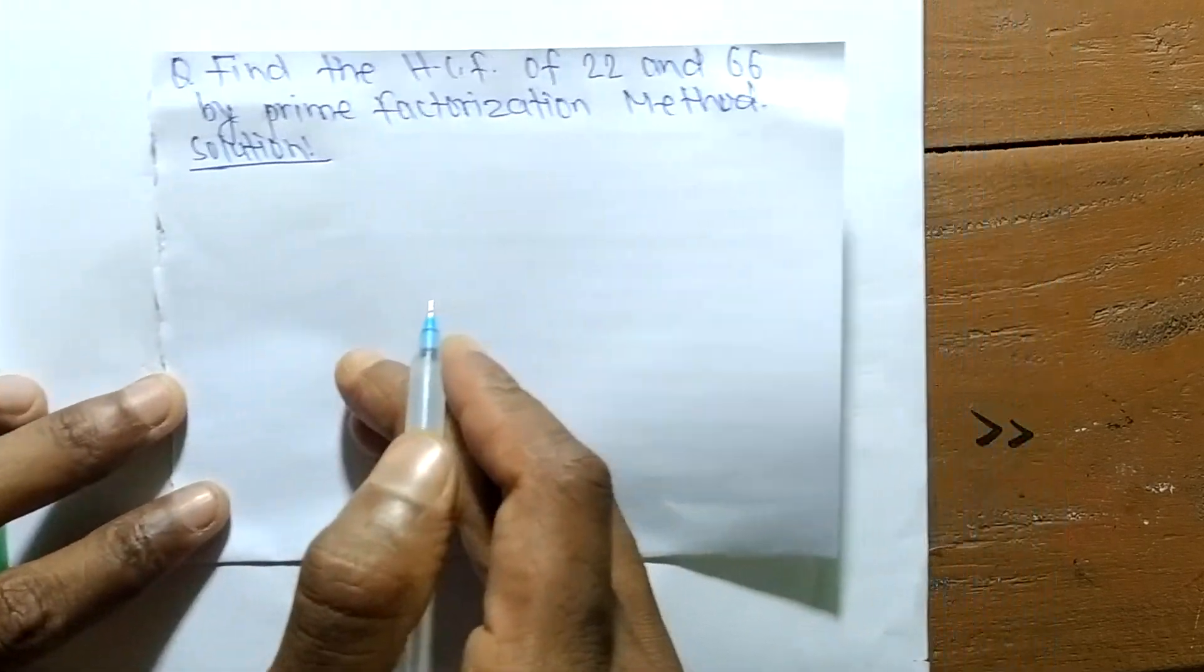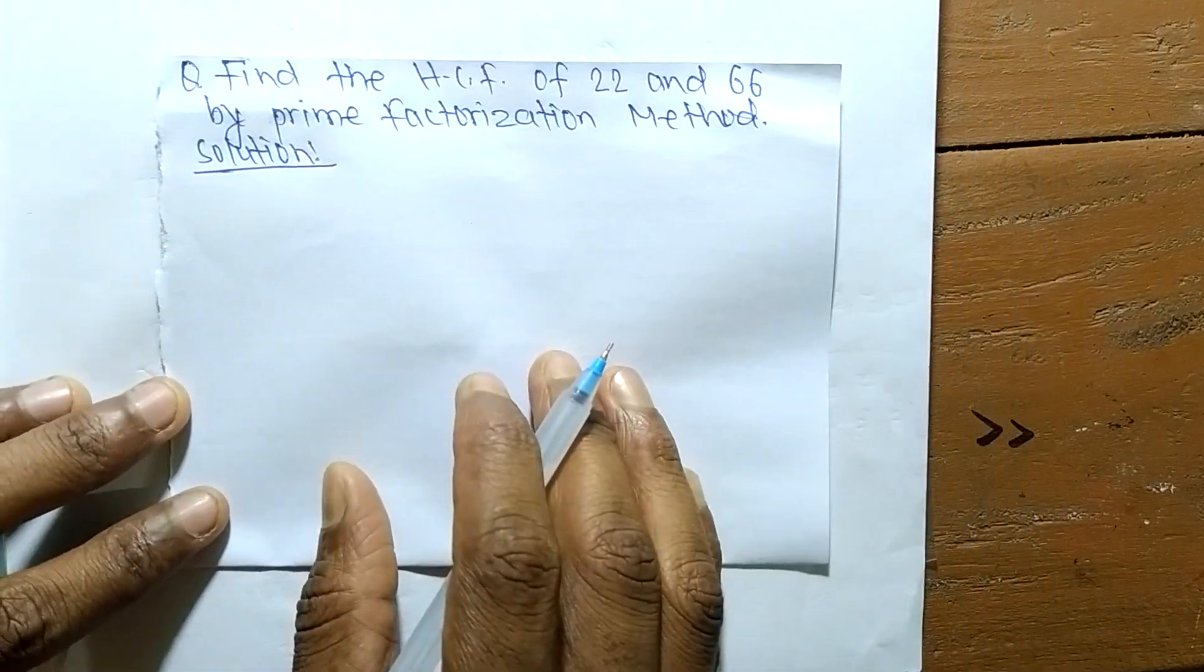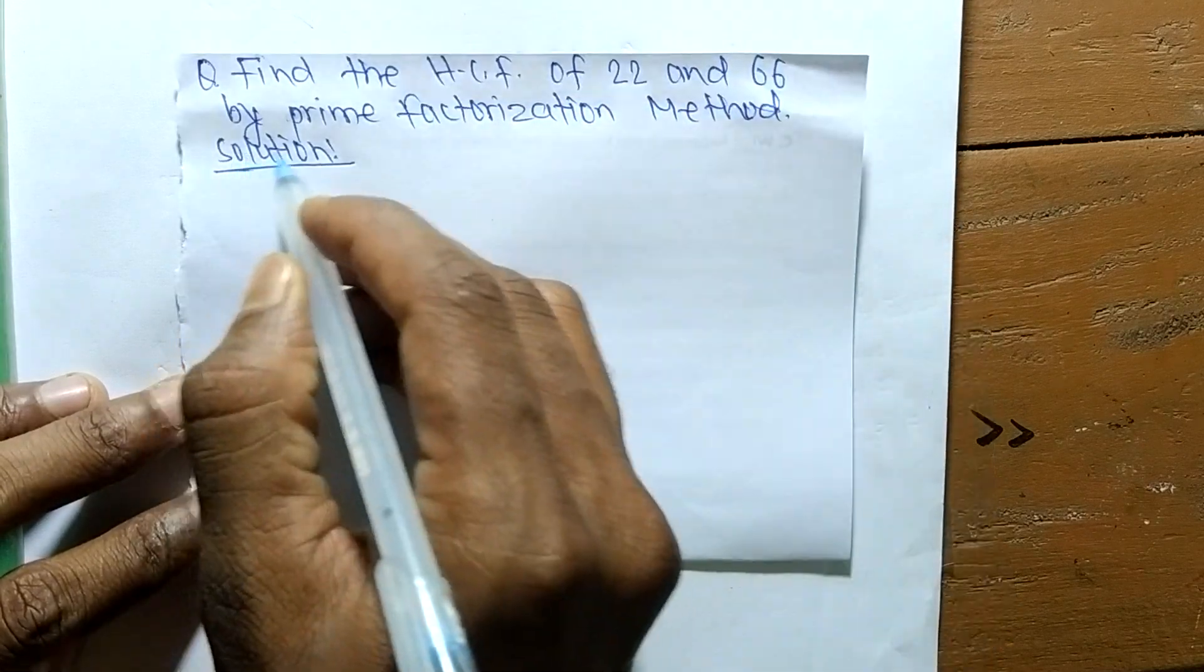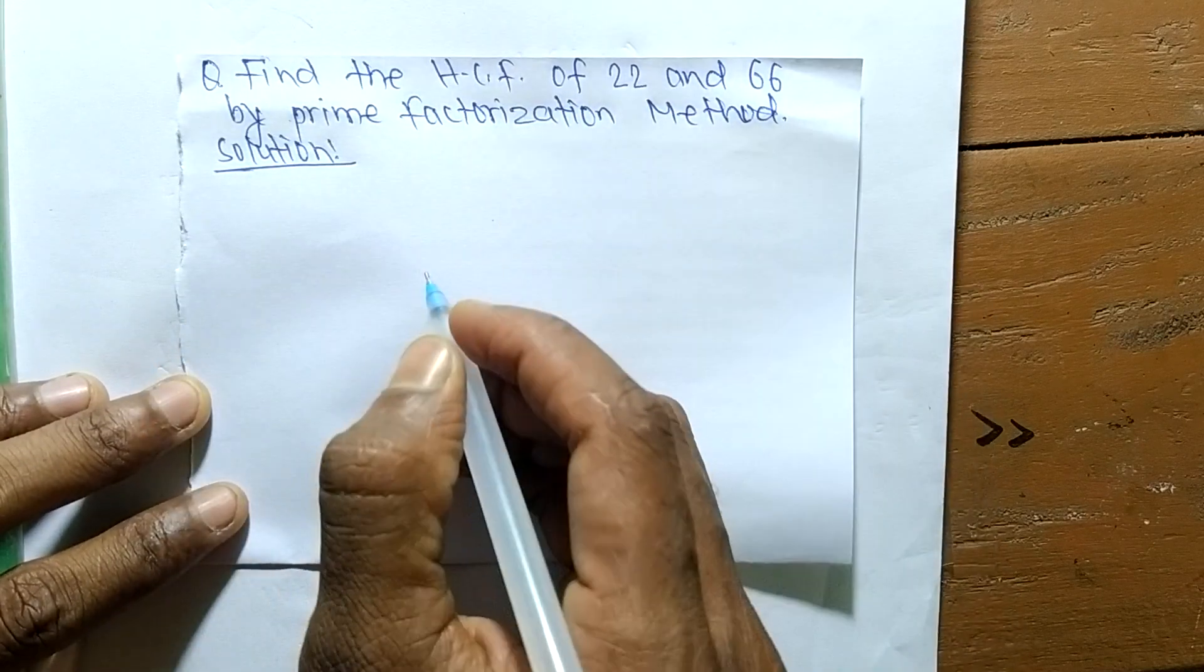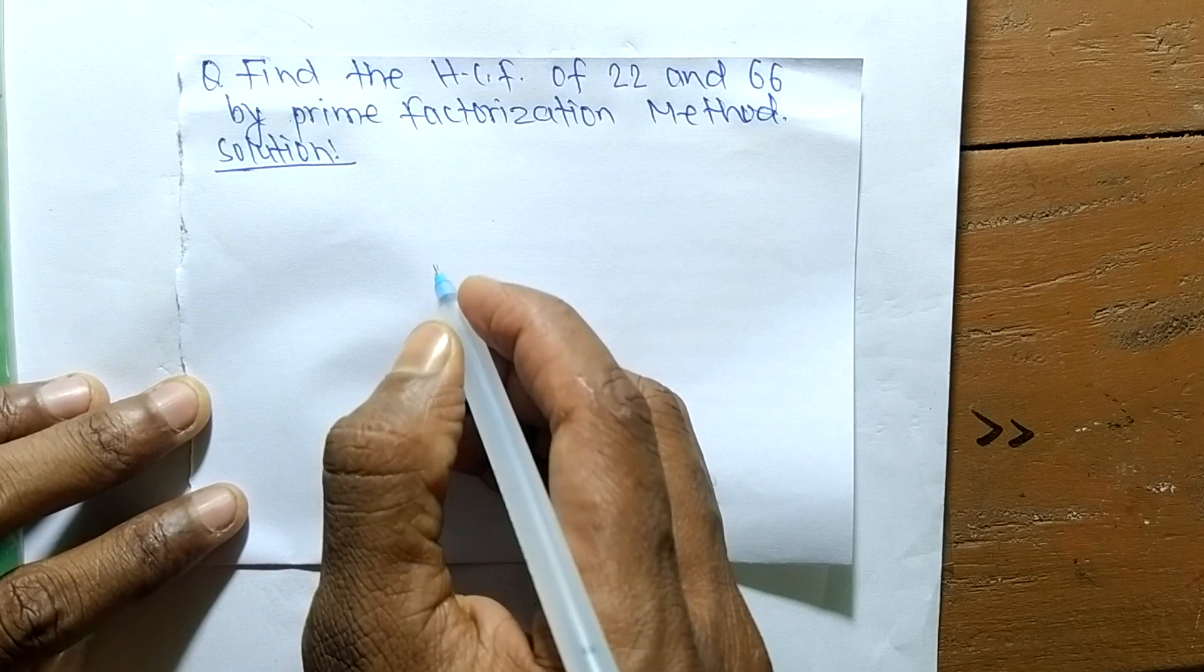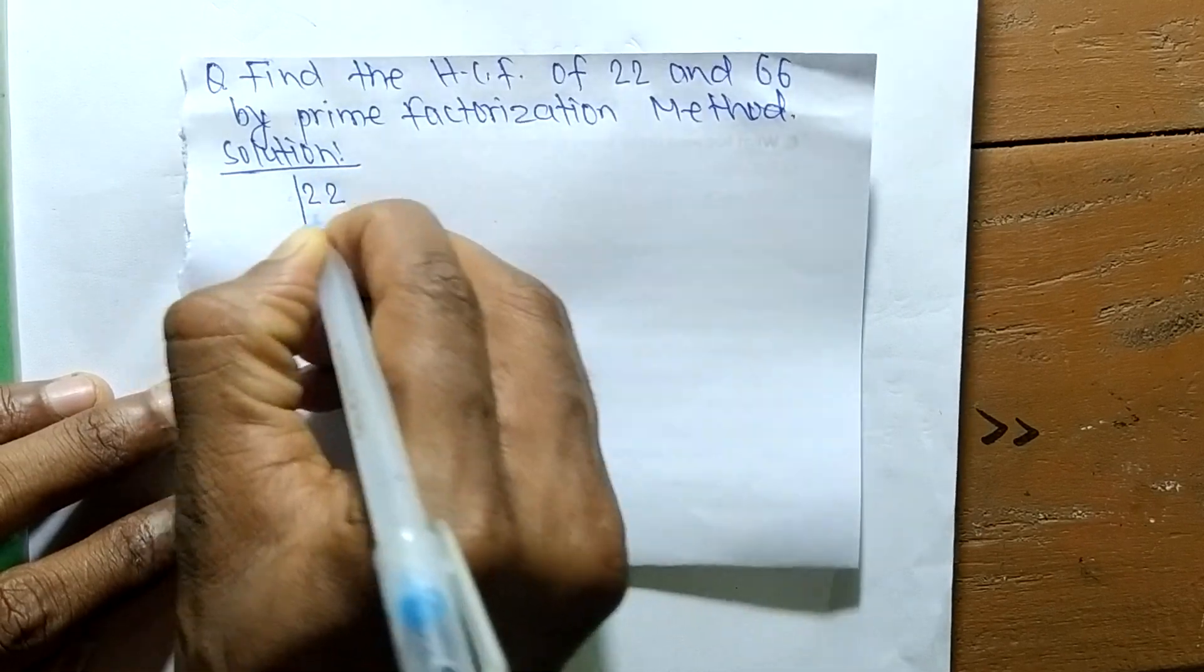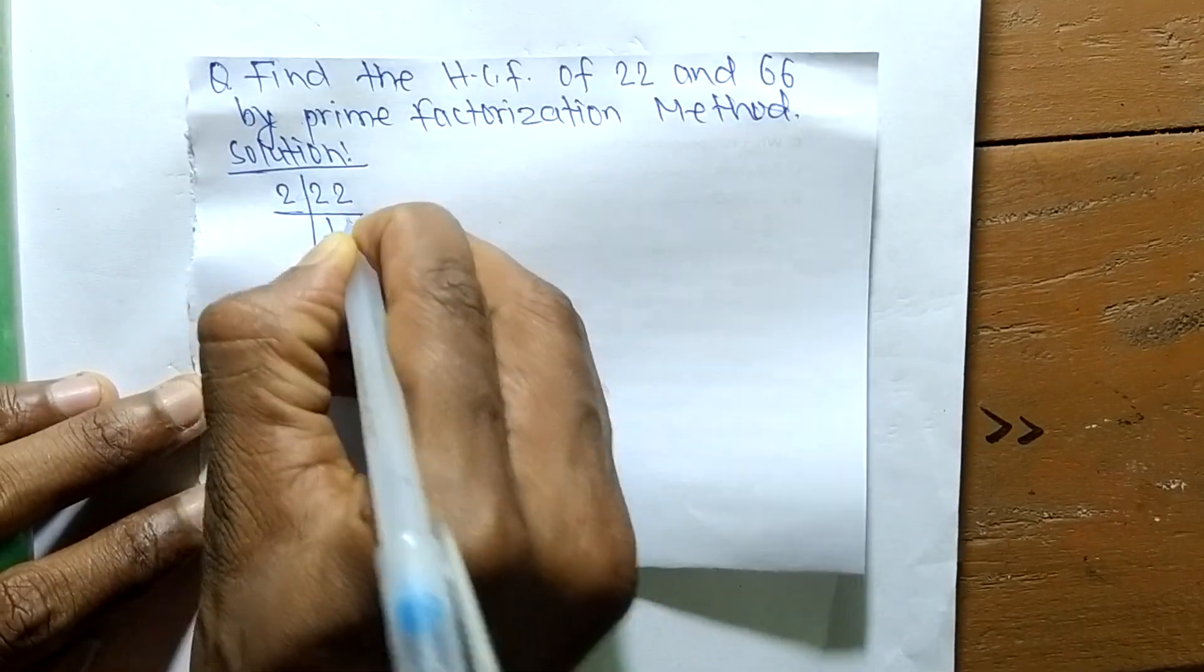Today in this video we shall learn to find the HCF of 22 and 66 by prime factorization method. In this method, first we find out the prime factors of 22, so it is 2 times 11.